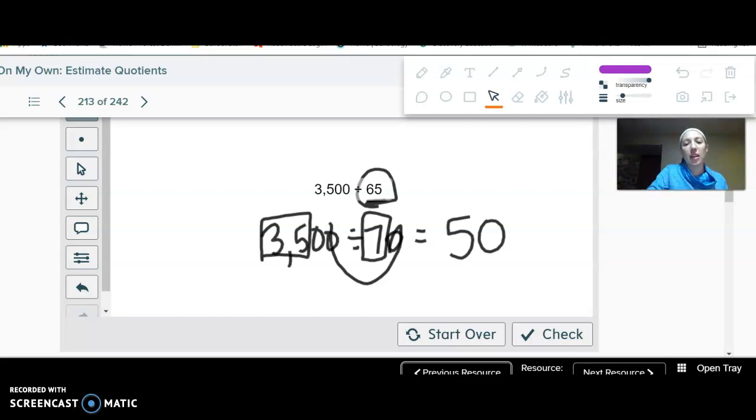Now, say it had been divided by 62 instead, and I had tried rounding and gone, okay, 35 divided by 60, 35 divided by 6, ooh, that doesn't work. Just move on to the compatible numbers. Okay? If the rounding doesn't work, which it sometimes won't, that's okay.